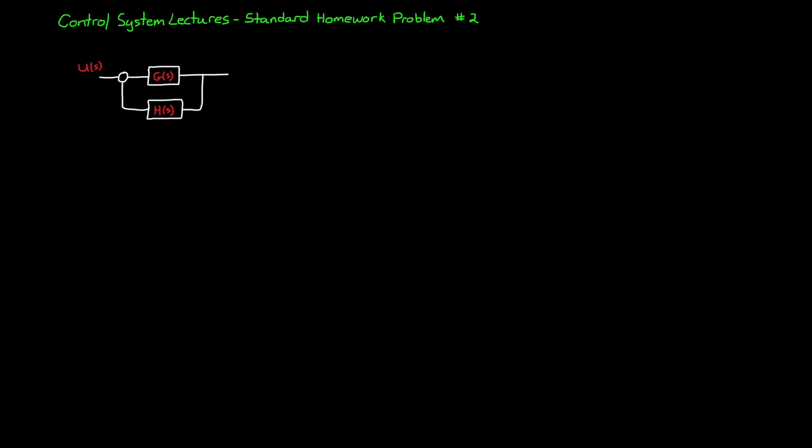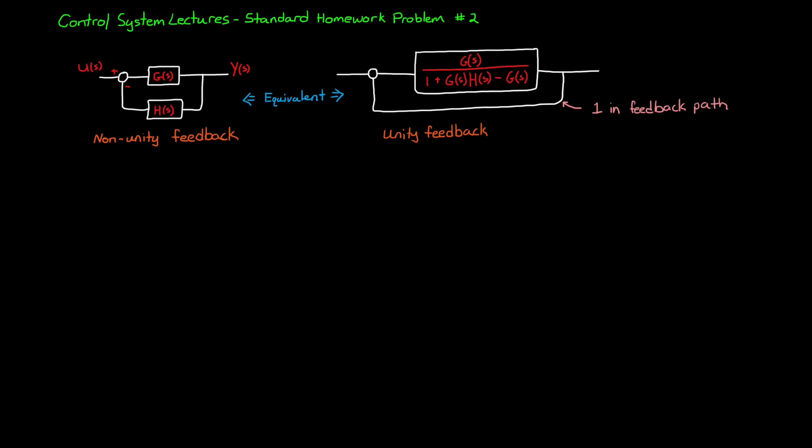We'll set the problem up this way. We have two systems represented by block diagrams. The system on the left has block G in the forward path and H in the feedback path. The system on the right has just a feedforward block with transfer function G over 1 plus GH minus G. The left system can be called non-unity feedback since there's a transfer function in the feedback path. And the system on the right is unity feedback, where unity basically refers to the 1 in the feedback path. The question is, both of these closed-loop systems are equivalent. They have the exact same closed-loop transfer function, but they have different open-loop transfer functions.